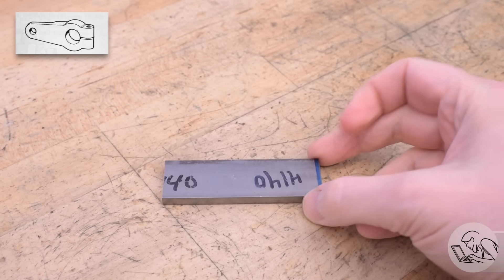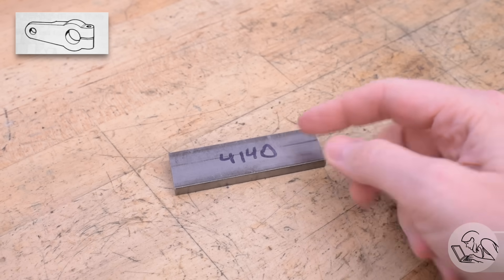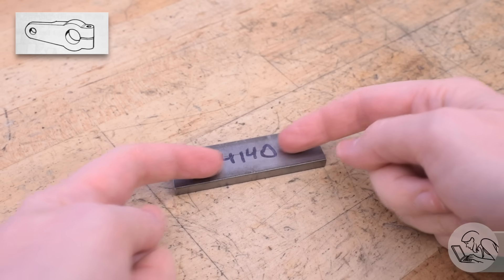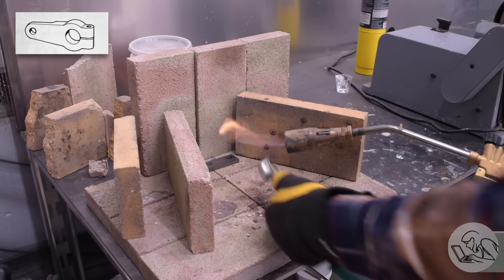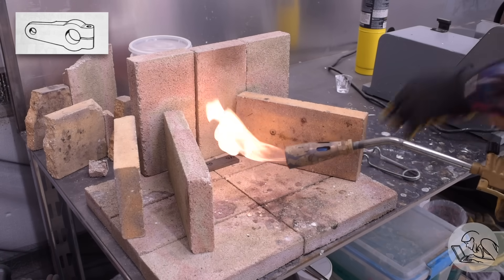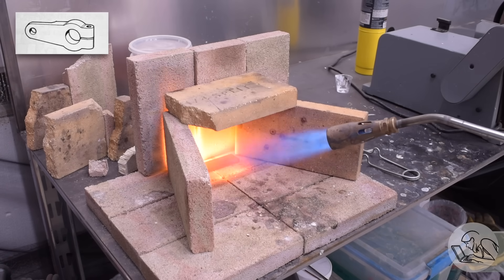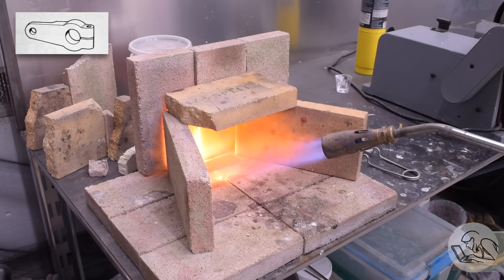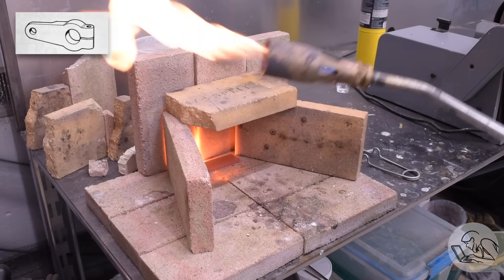I've got some 4140 that I'm going to make these two return cranks from. We need two of course and I'm going to be making them end to end on one piece very similar to how I did the link brackets. It starts over here on the hearth because I'm going to normalize this piece just to make sure that nothing warps while I machine it. Heat that to a glowing orangish red, let it cool down, and we can machine with confidence.